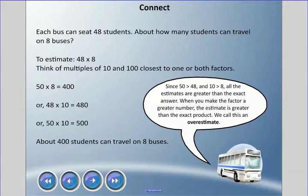So 50 times 8 is 400. Or if we look the other way, 8 is close to 10, so we could do 48 times 10 which is 480. Or we could change 48 into 50 and 8 into 10, and we get 50 times 10 is 500. So we can say about 500, 400, doesn't matter, about 400 students can travel on eight buses.